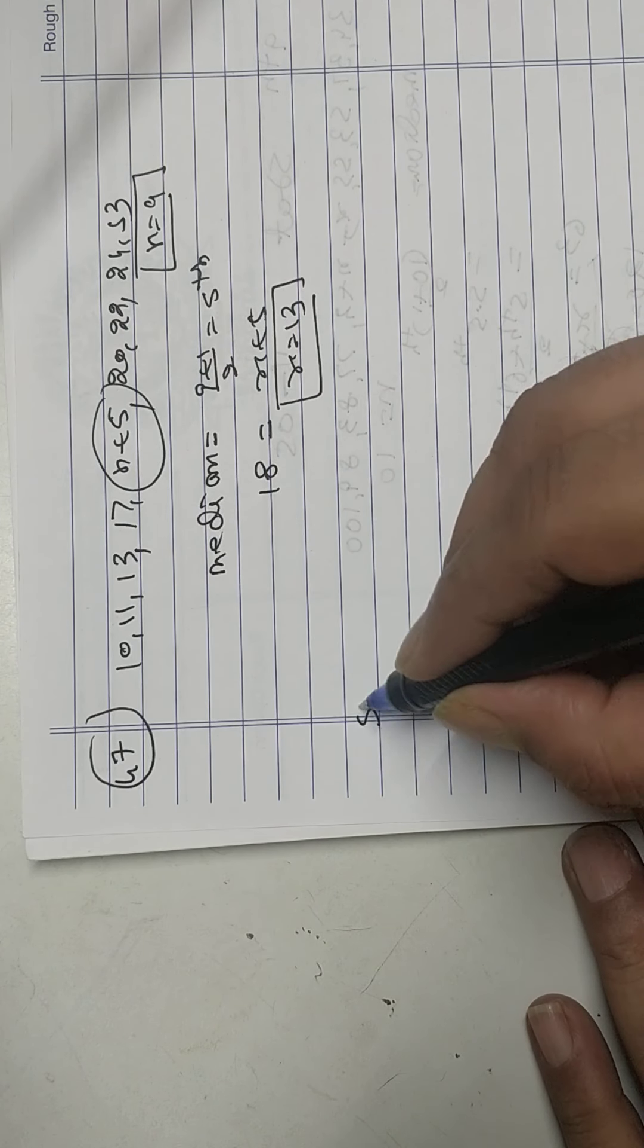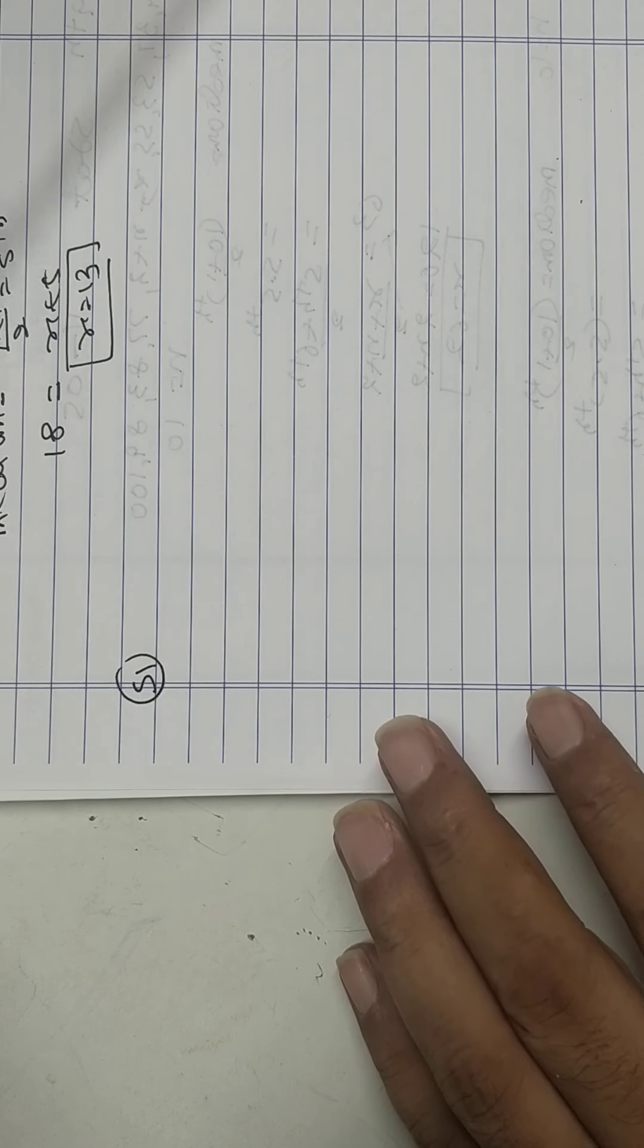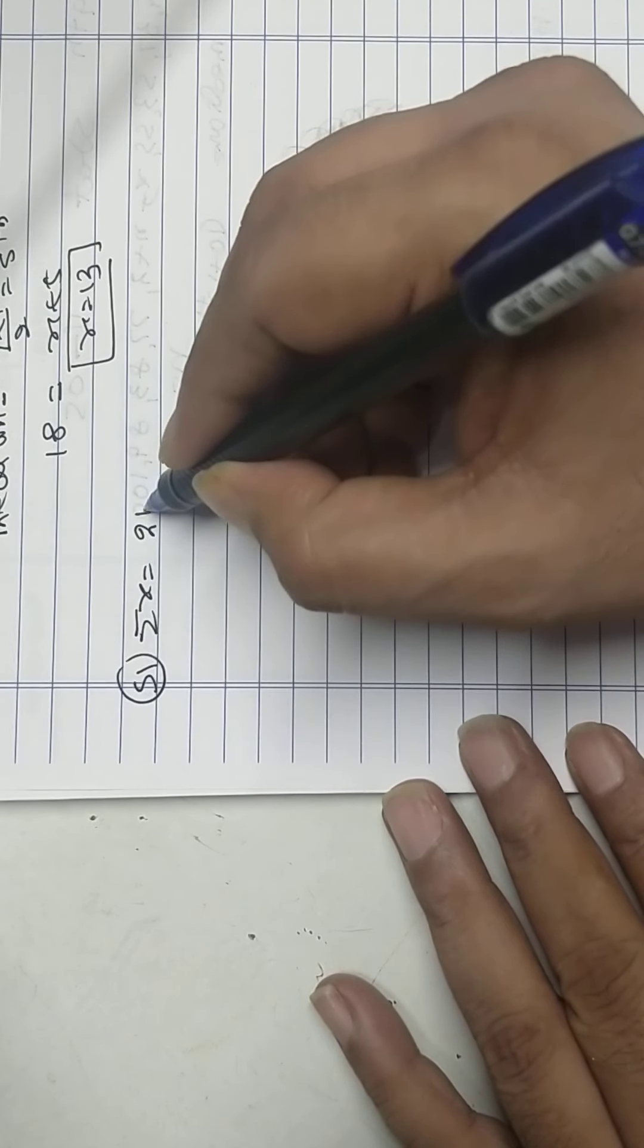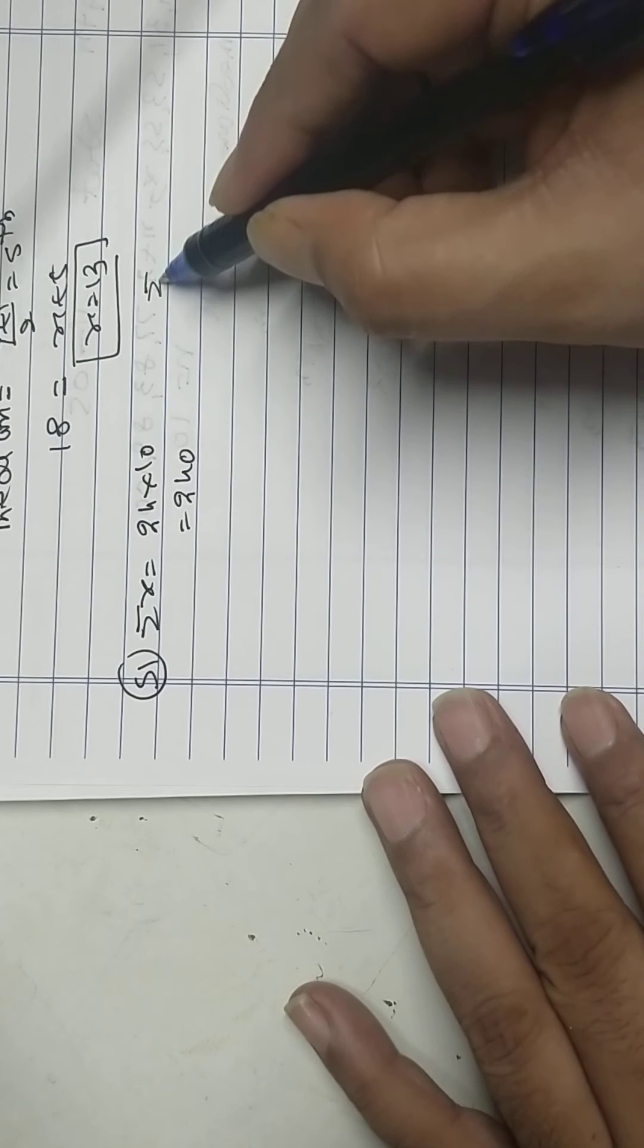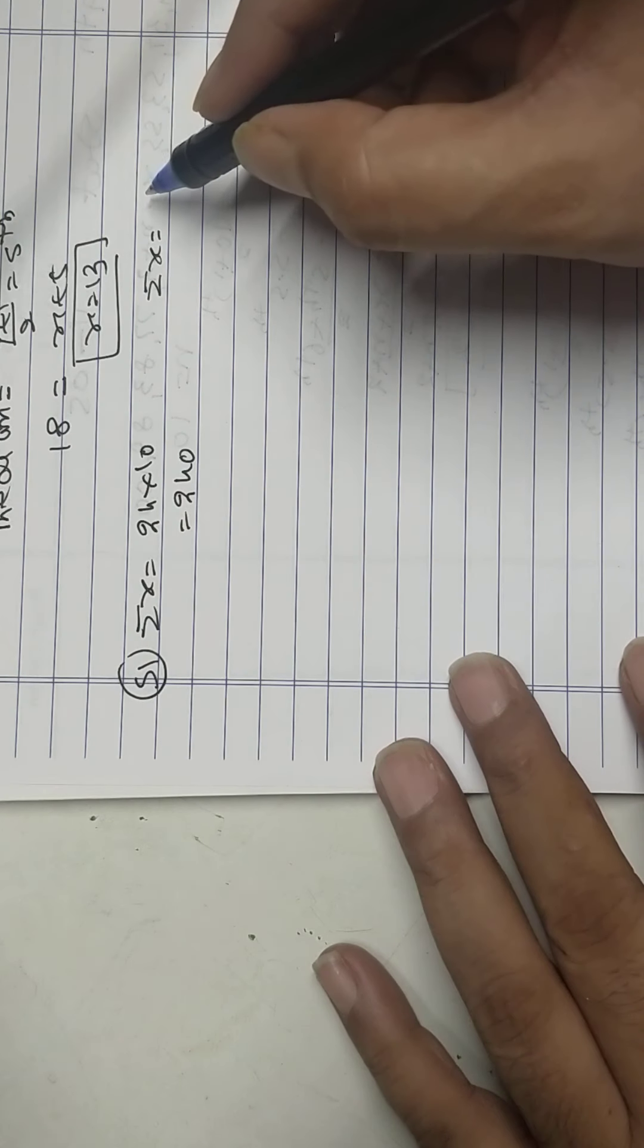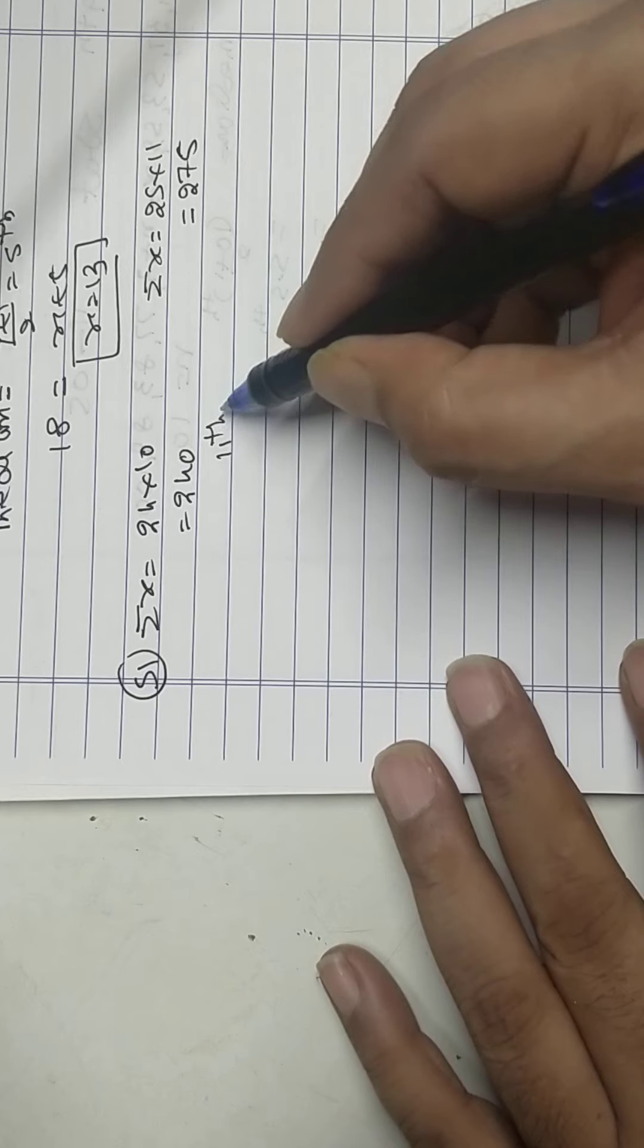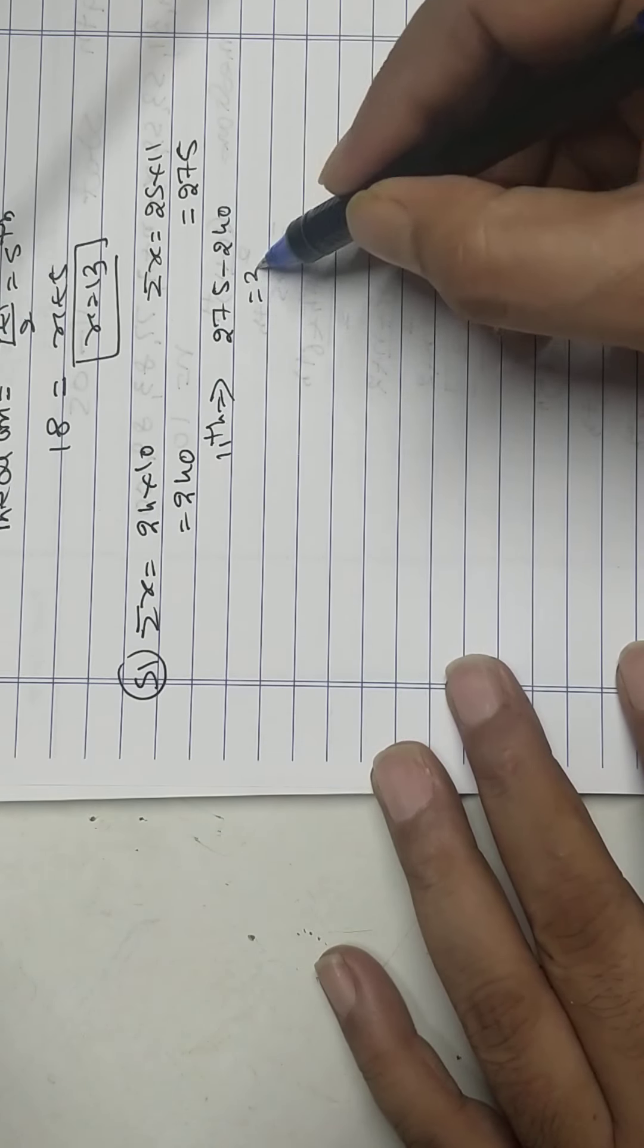Problem 51: The mean of 10 numbers is 24, so total will be 24 into 10, that is 240. One number included more, and their mean is 25, so 25 into 11, that is 275. So what was my 11th number? 275 minus 240 equals 35.